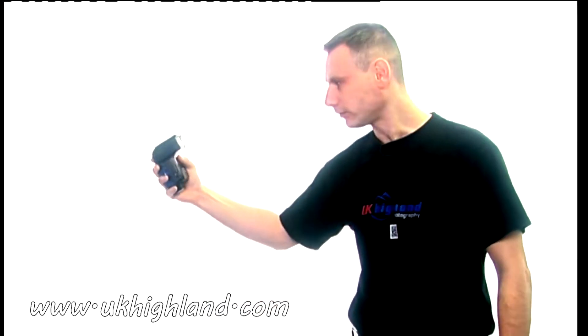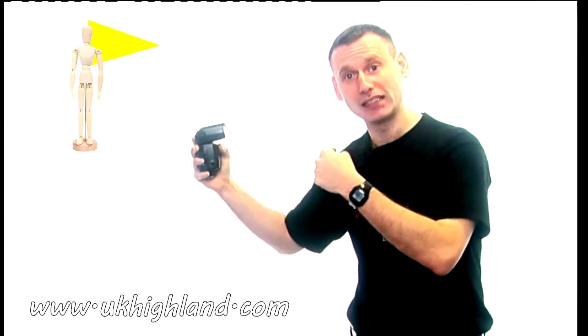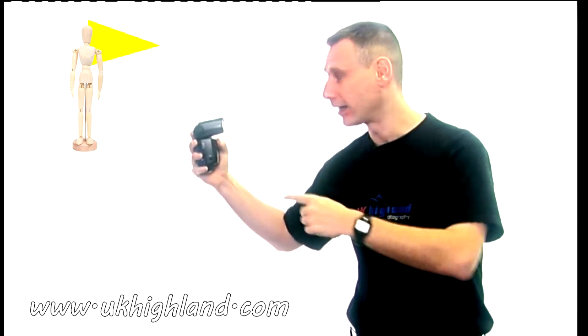So here's the flash gun. It's pointed at my face and I take a photograph of myself. Now under the rules of the Inverse Square Law, what is happening is that only my face is being lit by the flash.